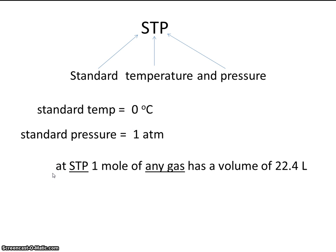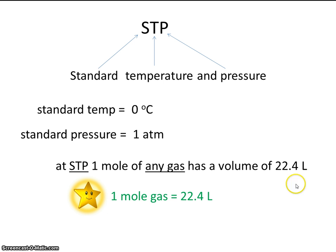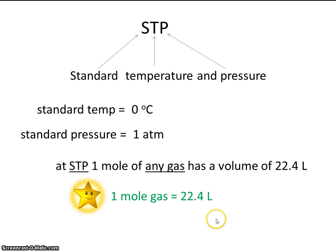You should probably write this down or memorize it. At standard temperature and pressure, 1 mole of any gas has a volume of 22.4 liters. So at STP, 1 mole of any gas will take up this much space. Even if you have a combination of gases like air — if you mix nitrogen and oxygen together and you have 1 mole of that mixture, it will still take up 22.4 liters of space.